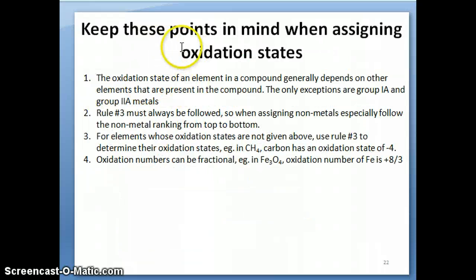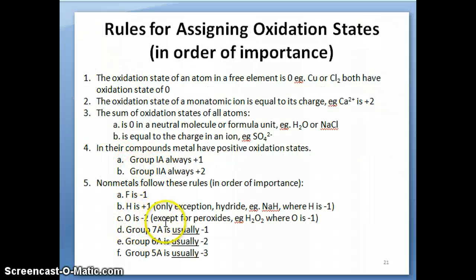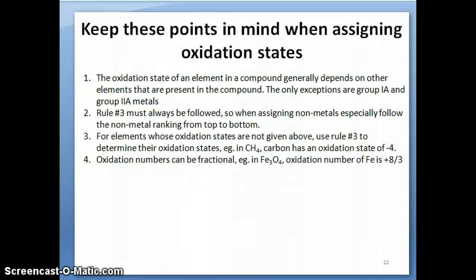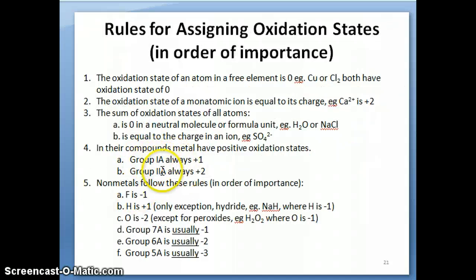The second slide covers some key concepts associated with oxidation numbers. Because we have this order of importance, a lot of times you can figure out the oxidation number for something like a Group 5A element by looking at what kind of element it's bonded to. The oxidation state of an element in a compound often depends on the other elements present. The only absolutes are Group 1A and Group 2A, which are always plus one and plus two.